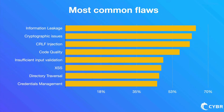Going back to the Veracode report, the most common types of flaws found were: information leakage, cryptographic issues, CRLF injections, code quality, insufficient input validation, cross-site scripting, directory traversal, and credentials management. Information leakage refers to an application revealing sensitive data — such as technical details of an application, developer comments, environments, or user-specific data — that can then be used by an attacker to exploit the target application. A basic example: if a developer added HTML or script comments containing sensitive information and never removed them before production — for instance, a comment saying 'TODO: add backend data sanitation' could signal to an attacker that data sanitation was never implemented.